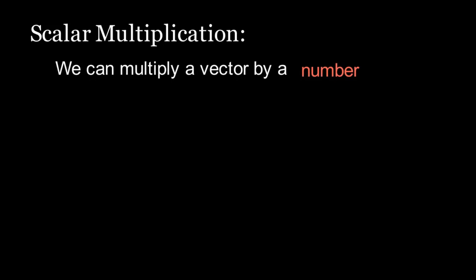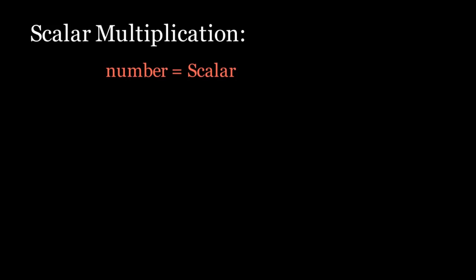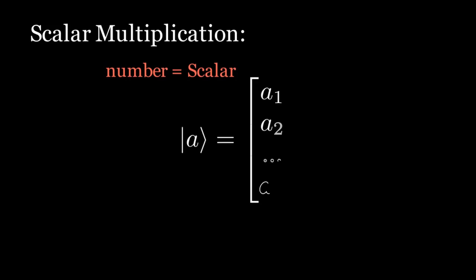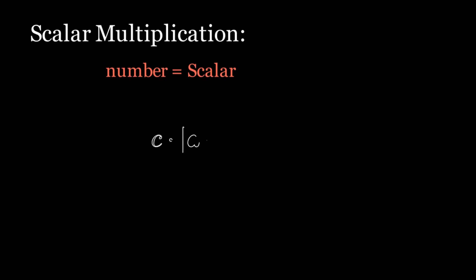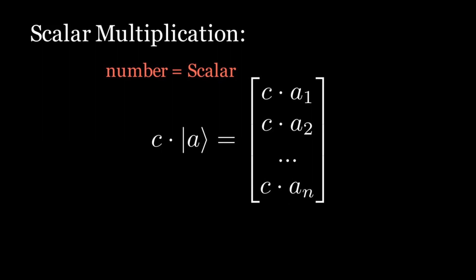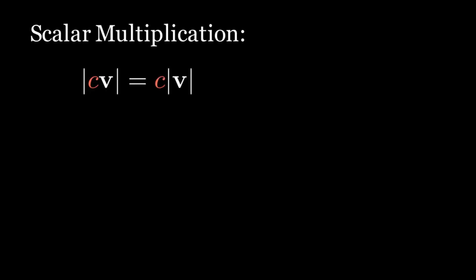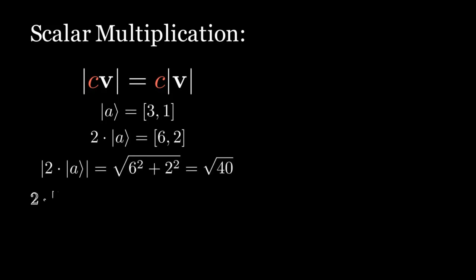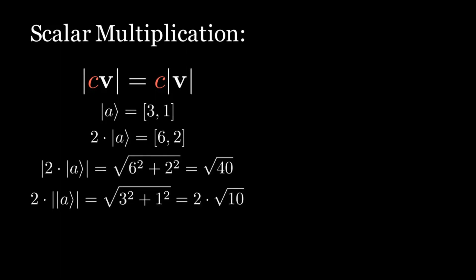Now let's look at scalar multiplication. We can multiply a vector by a number — in linear algebra, numbers are often called scalars. Scalar multiplication just means multiplying each entry by the given number. For example, multiplying ket a by the number c gives us the vector (ca₁, ca₂, …, caₙ). Multiplying a vector by a positive number c multiplies its length by a factor of c — you can pause the video to check this.